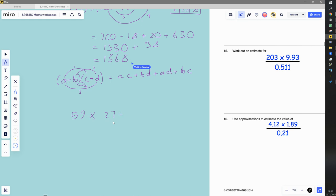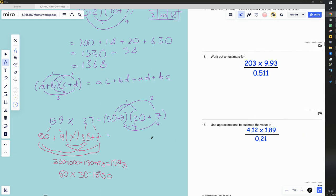So we'll do 59 times 27. I'm going to do that in the double brackets expanding method. I'm just going to pause the video. I want to see if you can work out how to do that. Okay, good.